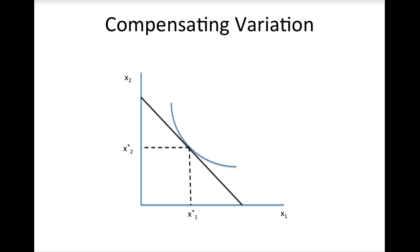To figure out how much money that is, start the consumer off at their optimal consumption bundle before the price increase. Let's suppose that the price of good one increases. Hopefully you remember from last semester that if the price of good one increases, the budget line will pivot inward. This puts the consumer on a lower indifference curve than before, which means that she is worse off.